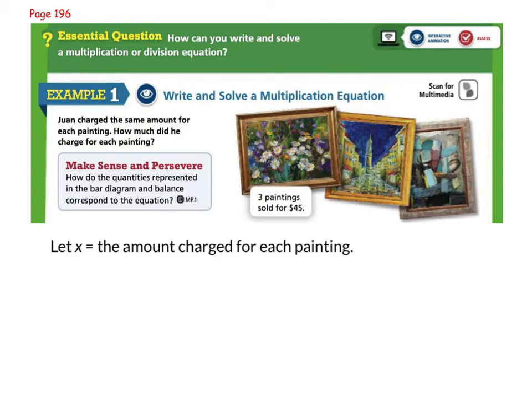Turn your book to page 196, and we're going to take a look at example one, but I want you to put a post-it over the third column in the middle of your page. When we take a look at this example, it says Juan charged the same amount for each painting. How much did he charge for each painting? And we can see right here that he charged $45 for all three of them together. So what we want to do is first write an equation. If X is representing the amount charged for each painting, we know that three times each X, or times each painting, because there are three of them, has to total the $45.